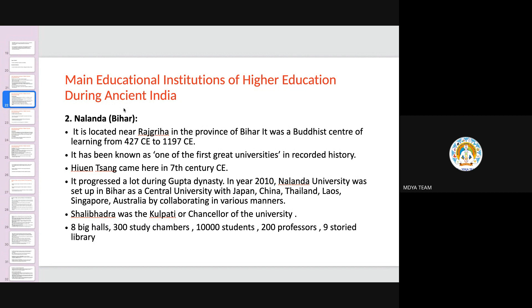This university had a very large campus — about one mile or one and a half kilometers in length. There was a Dwar Pandit, a teacher who was in charge of admissions to the university, with specific criteria, rules, and regulations for entry. It was a very systematic kind of university. Shilabhadra was the Kulpati or Chancellor of the university.